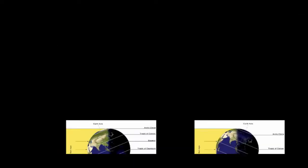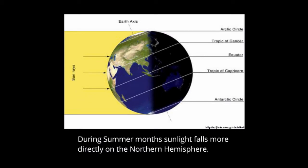Let's look into why we have seasons here on the earth. The earth is tilted to the plane of the ecliptic by 23 and a half degrees. In the summer months, sunlight falls more directly on the northern hemisphere, making it warmer. At the summer solstice, the sun is directly overhead at the Tropic of Cancer. The sun shines all day in the Arctic Circle region, while the Antarctic Circle receives no sunlight.